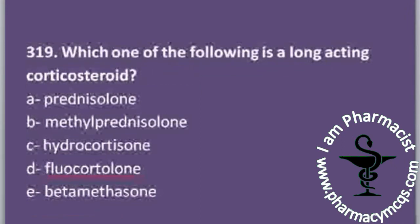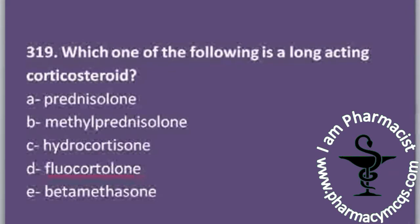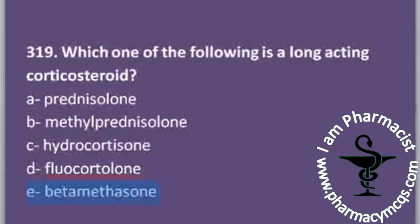The next MCQ asks which of the following is a long-acting corticosteroid. Options are prednisolone, methylprednisolone, hydrocortisone, fluocortolone, and betamethasone. Long-acting corticosteroids include betamethasone and dexamethasone. Betamethasone is the correct answer here, as the others are short or intermediate-acting. Because it is long-acting, its dosing frequency will also be less.